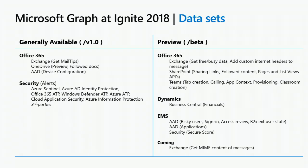In terms of datasets you can access, you have Office 365, Exchange, OneDrive, and Azure Active Directory. You have the security pillar, which is across all Microsoft security products as well as third-party security products. In our pre-public preview or beta branch, you have more datasets from within Office 365, new financials from Dynamics, new risky users, sign-in access review from Azure Active Directory, and we're extending the Exchange datasets as well.